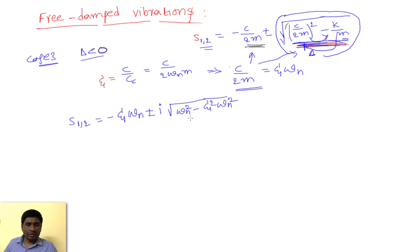If I take omega n squared common, it will become one minus xi squared. I will call this entire term omega d, where d is the damping. Since we applied some damping here, the natural frequency is modified.